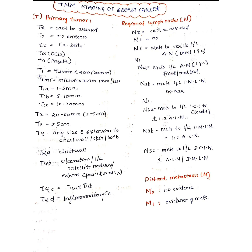In N1, there is metastasis to the ipsilateral axillary lymph nodes at level 1 and level 2, and the lymph nodes are still mobile, not fixed. N2 is divided into N2a and N2b. In N2a, metastasis to the ipsilateral axillary lymph nodes (level 1 and 2) where the nodes are fixed or matted. In N2b, there is metastasis to the ipsilateral internal mammary group of lymph nodes.